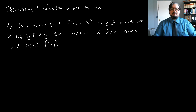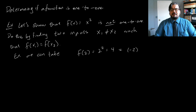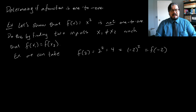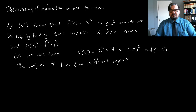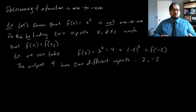We have lots of options, but one would be: f(2) = 2² = 4, and that's also the same as f(−2). So the output 4 in the range of f has two different inputs that go to it — 2 and −2. This doesn't mean f is not a function — it still is — but we don't have that each output only has one input, so we say that the function is not one-to-one.